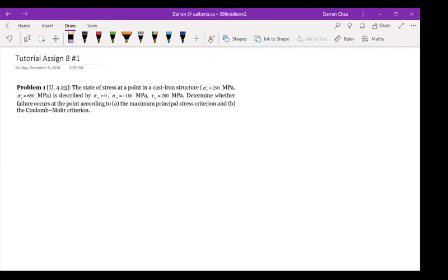This question is asking you whether the material of a cast iron structure is going to fail based on two different criteria. The first of which is the maximum principal stress criterion and the second one is the Coulomb-Mohr criterion.